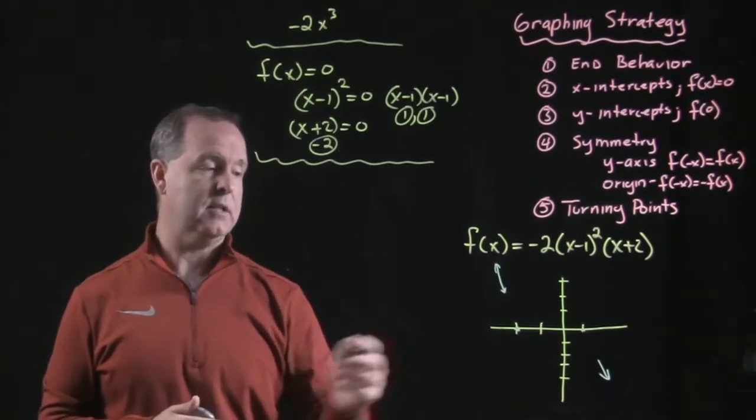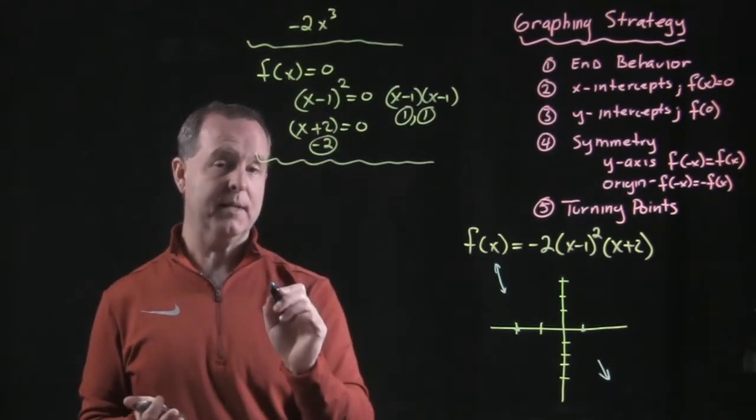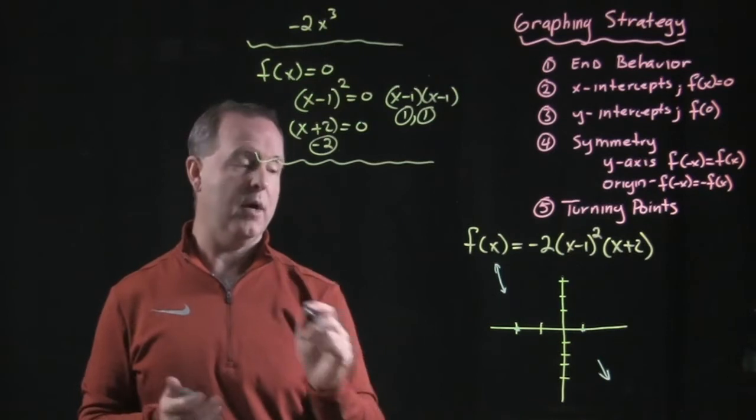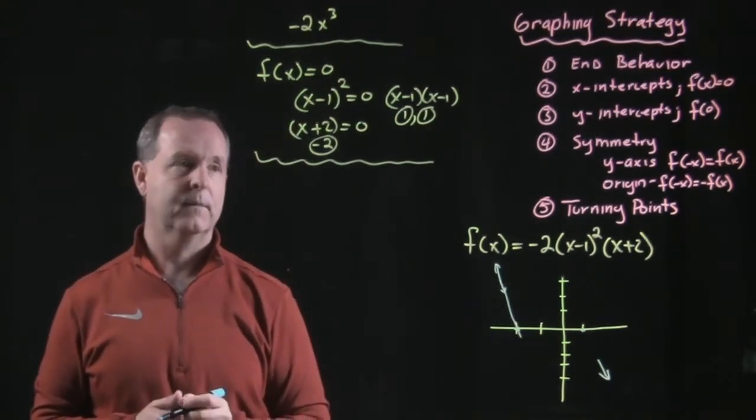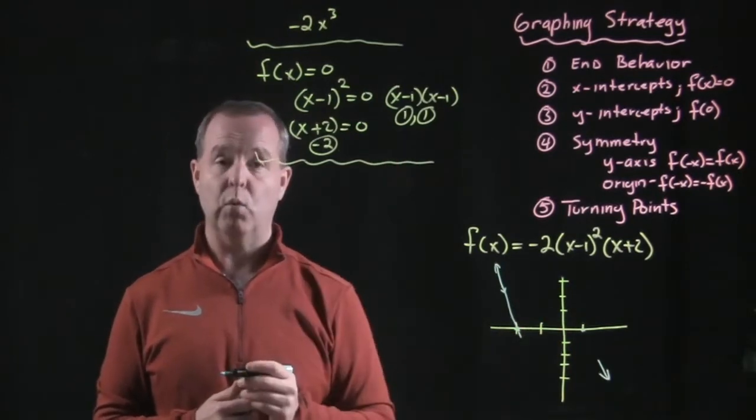What happens on the solution at negative 2? As multiplicity an odd number, in this case 1, means it has to cross. So I know it crosses there. The other solution at 1, what do we know?